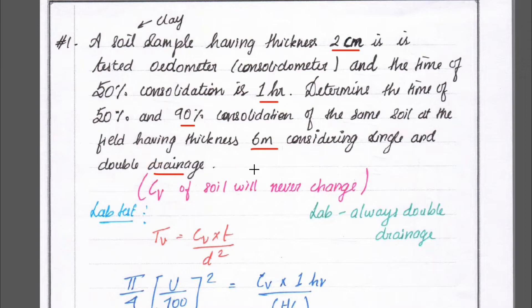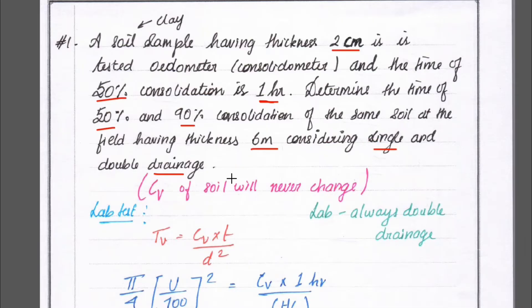The same soil is tested in the laboratory as well as in the field. In the laboratory, 50 percent consolidation takes 1 hour. Likewise, we have to find out 50 percent consolidation and 90 percent consolidation in the field, in both single and double drainage conditions.